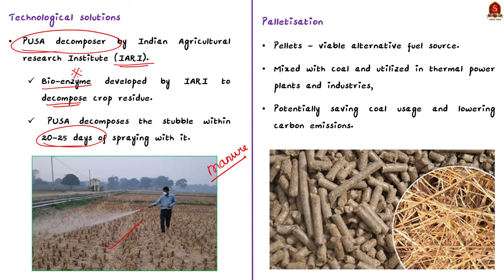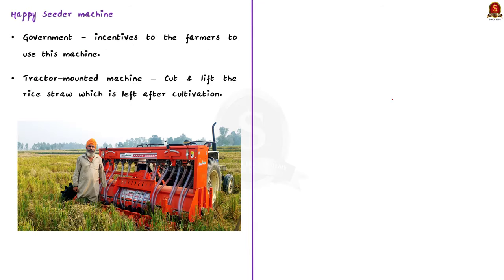Next is pelletization. Paddy straw, when dried and transformed into pellets, becomes an alternate fuel source. When mixed with coal, these pellets can be used in thermal power plants and industries, thus saving coal usage and lowering carbon emissions. Next is the Happy Seeder machine. The government is providing various incentives to farmers to use this machine. Happy Seeder is a tractor-mounted machine that can cut and lift the rice straw left after cultivation.